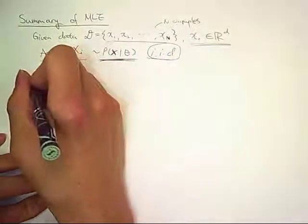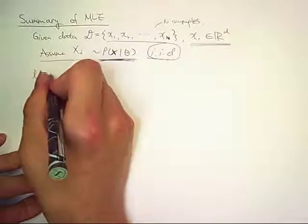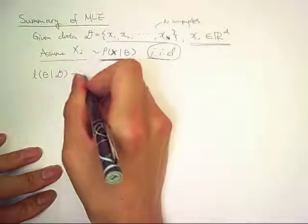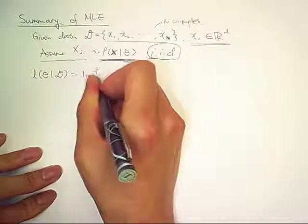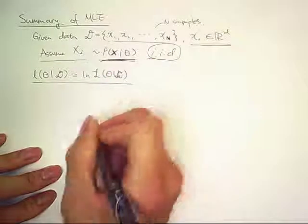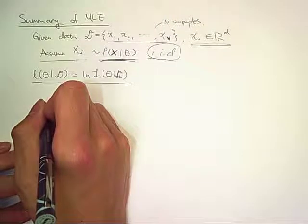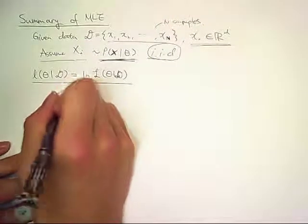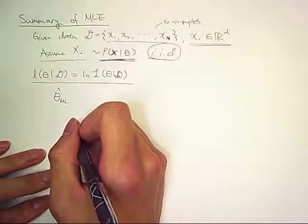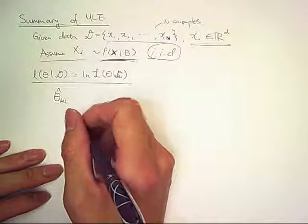We also define the likelihood function and the log-likelihood function. The log-likelihood is the natural log of the likelihood function. The goal of MLE is to estimate theta sub-ML to maximize the likelihood function given D, which means it maximizes the probability of observing data D given the set of parameters.